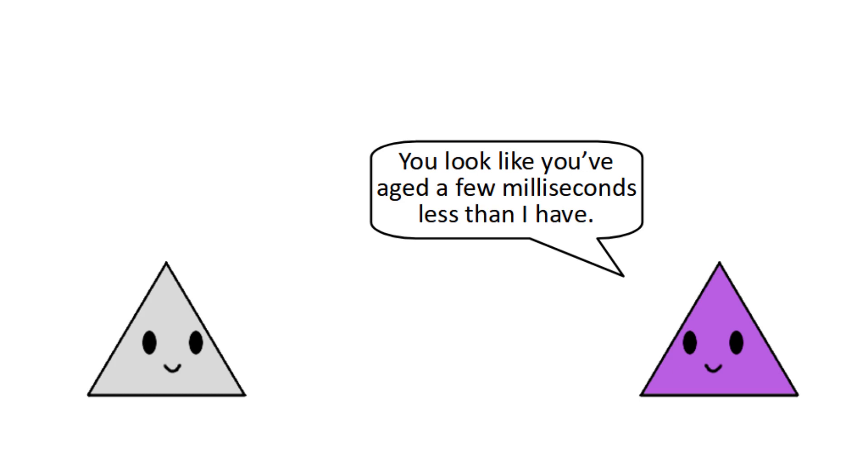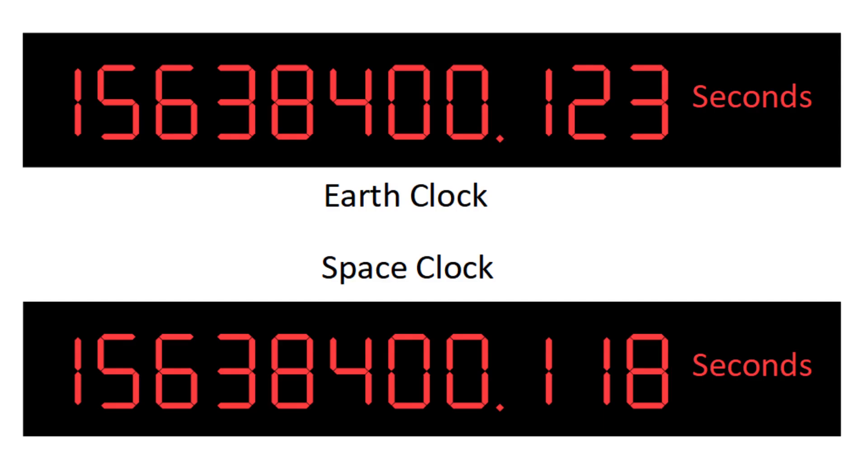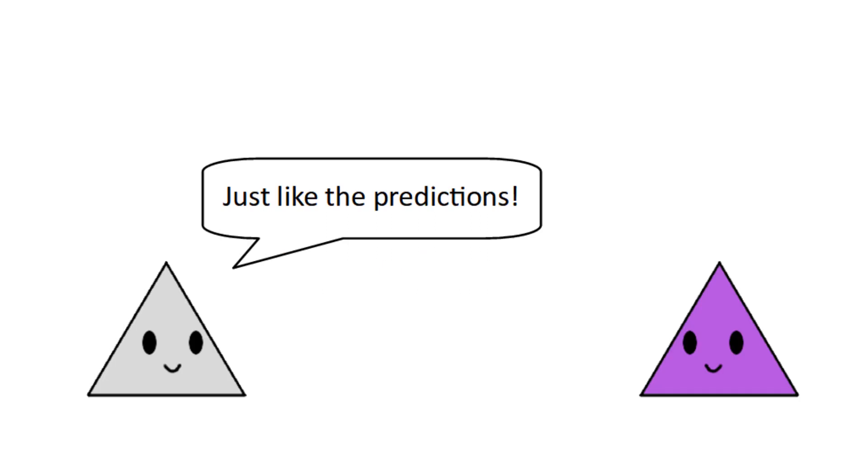A few milliseconds of difference over six months is not much, but it is measurable, and tests involving sending clocks up there have confirmed that time dilation is real. The reason it's only a few milliseconds is that,